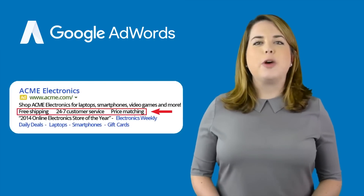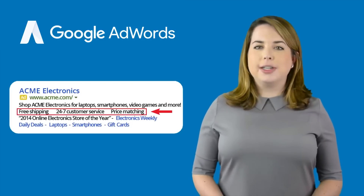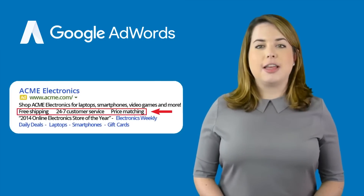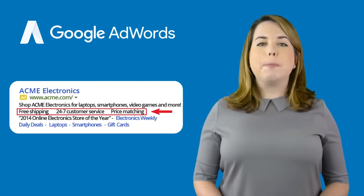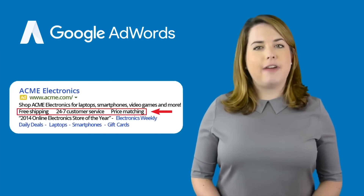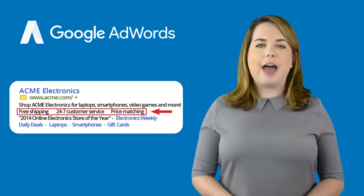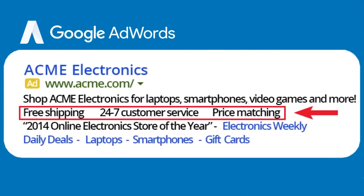The Callout Extension is one of many AdWords ad extensions that lets you show your business's added value with your ad. Callout Extensions let you include specific attributes about your business, product, or service that will show below your ad when your ad appears on the Google search network.